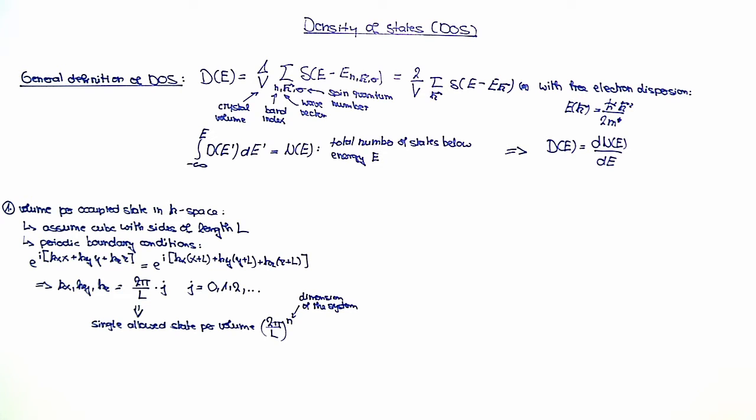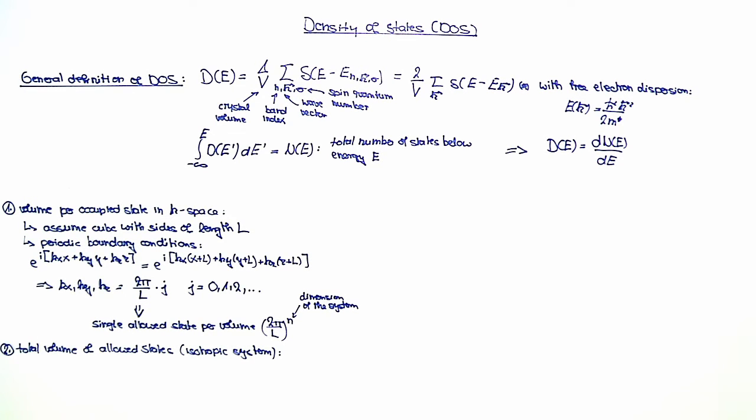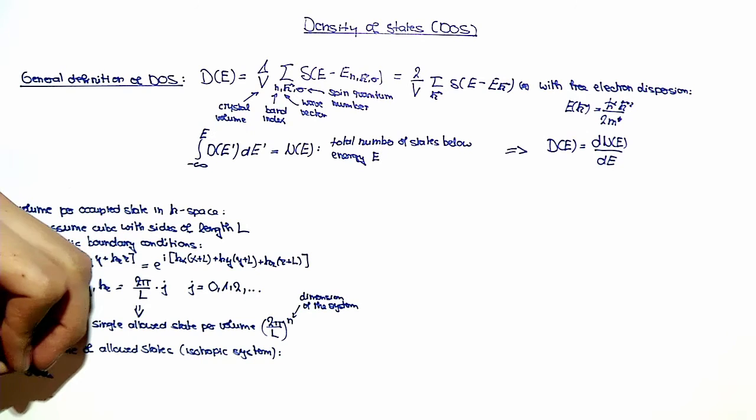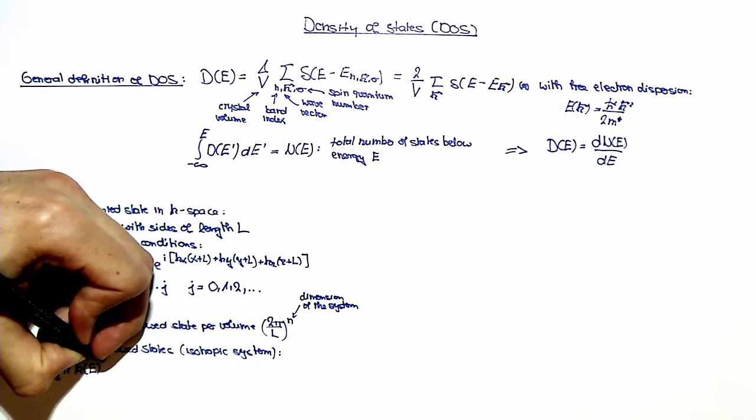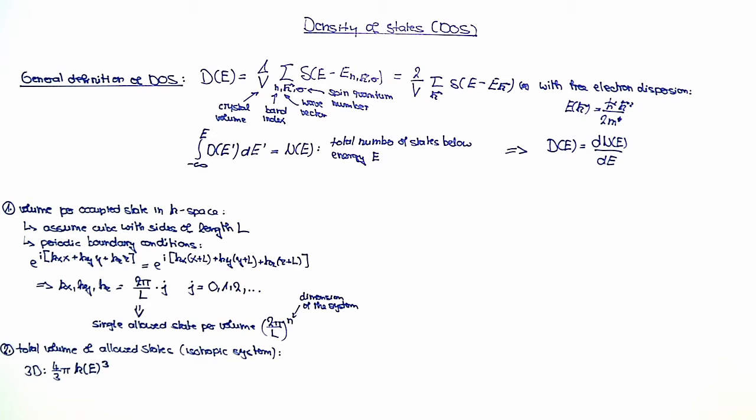Now we know the volume per occupied state in k-space, and we also need to calculate the total volume of allowed states in k-space. As we are given in the problem set, we are dealing with an isotropic system. For 3D, this total volume is just a sphere with radius k. So in 3D, we get 4/3 times π times k(E)^3. For 2D and 1D, we get accordingly the area of a circle and a line of length 2k(E).